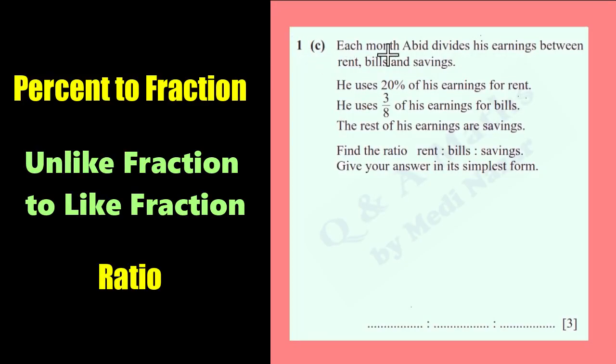Number 1, letter C. Each month, Abhi divides his earnings between rent, bills, and savings. He uses 20% of his earnings for rent. He uses 3 over 8 of his earnings for bills. The rest of his earnings are savings.